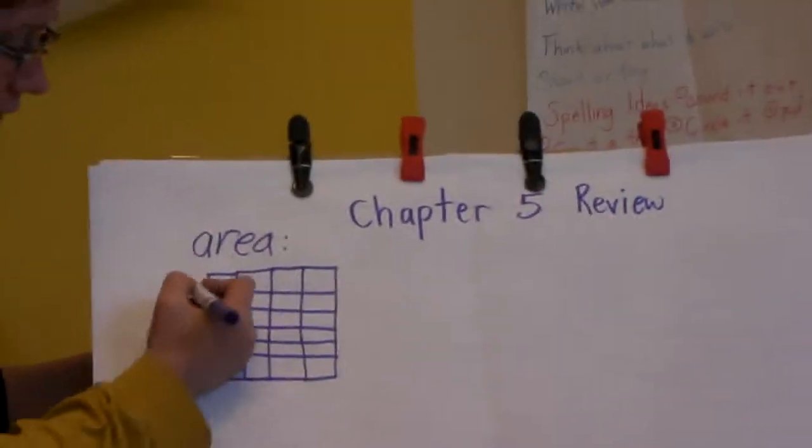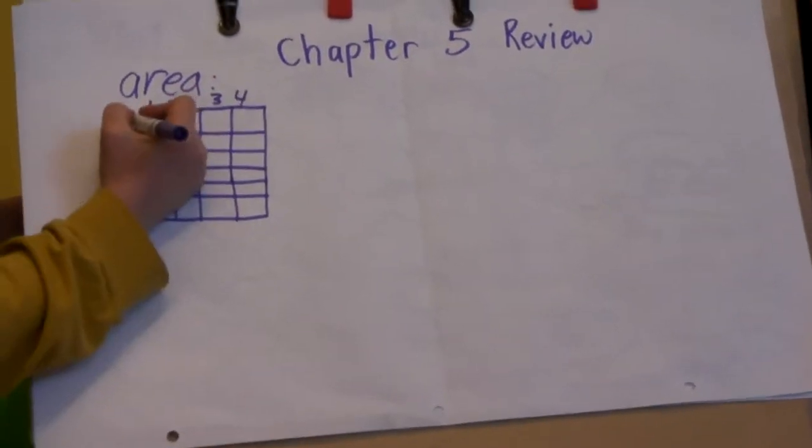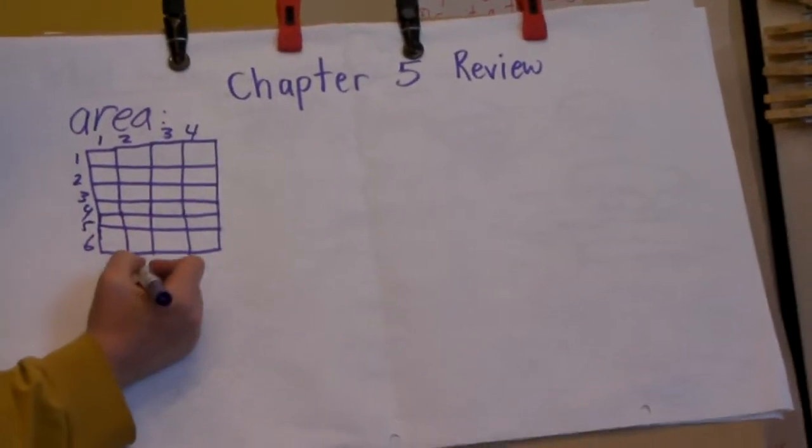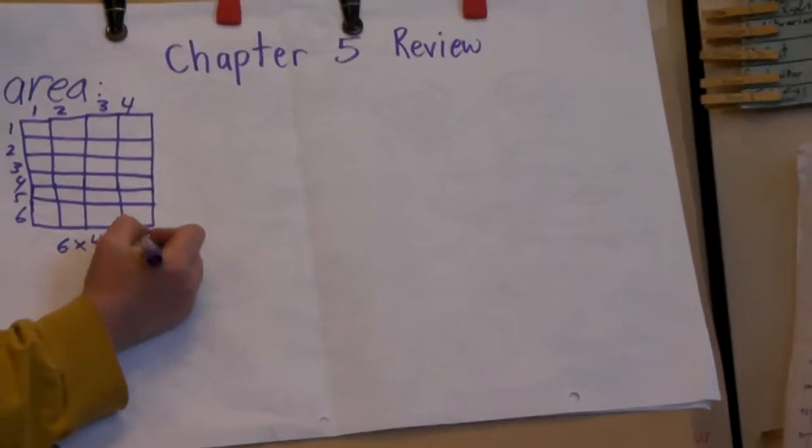Okay, and we know that because there's 4 across, 2, 3, 4, and there are 6 down, 1, 2, 3, 4, 5, 6. We could say 6 times 4 equals 24.